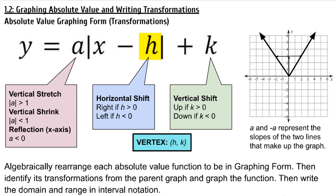H represents the horizontal shift. If H is greater than 0, you move to the right. If H is less than 0, you move to the left. The tricky thing is to remember that the minus has to be there in order for H to be positive. But if there's a plus, that means H had to be negative in order to create a minus negative, which becomes plus.